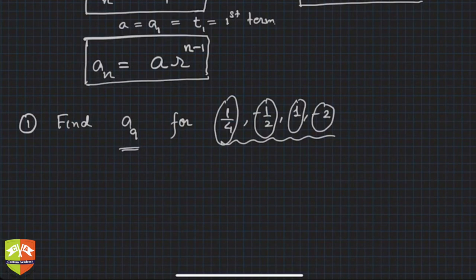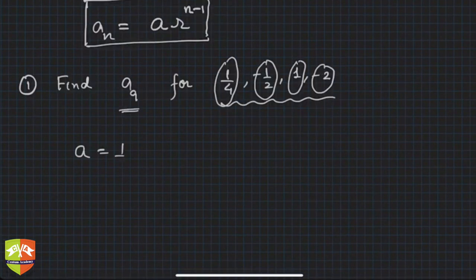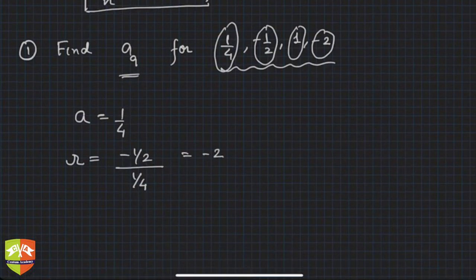an is ar^(n-1). Clearly a is 1 upon 4. How do I find out r? Take the ratio of any two consecutive terms: -1/2 divided by 1/4, this is r which is -2. So what is a9? a9 is equal to ar^8, which is 1 upon 4 into -2 to the power 8. So answer is 64.